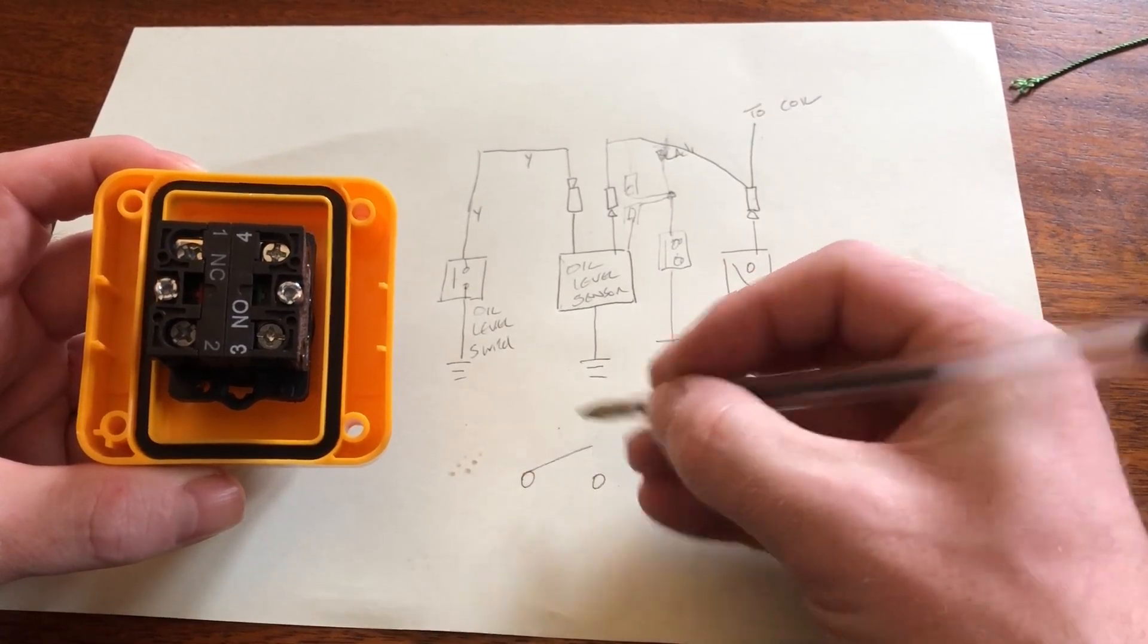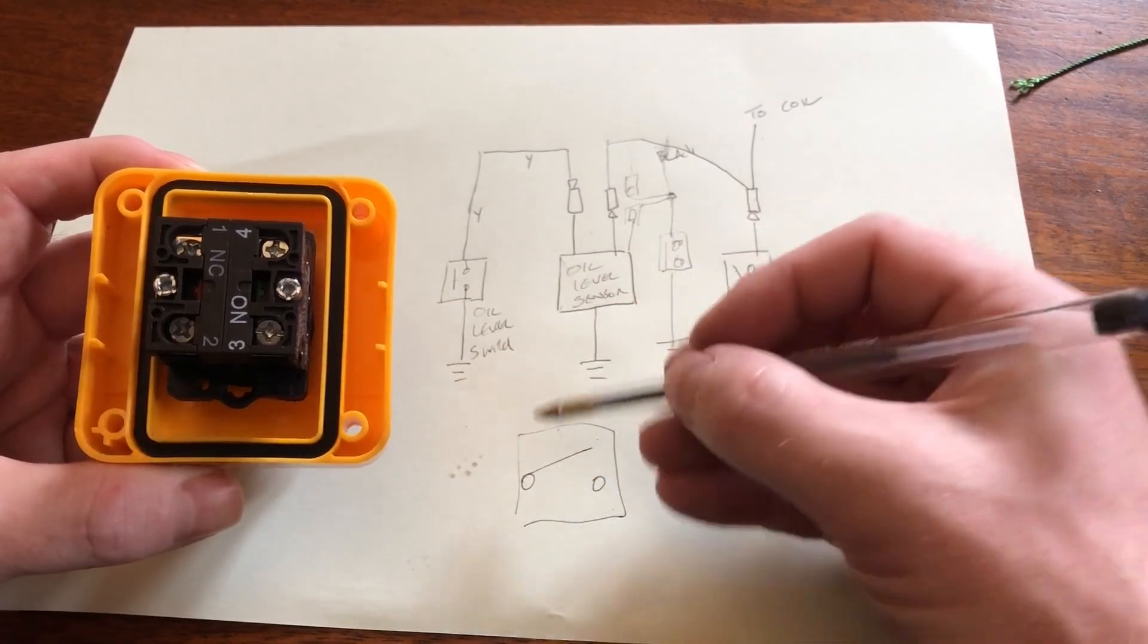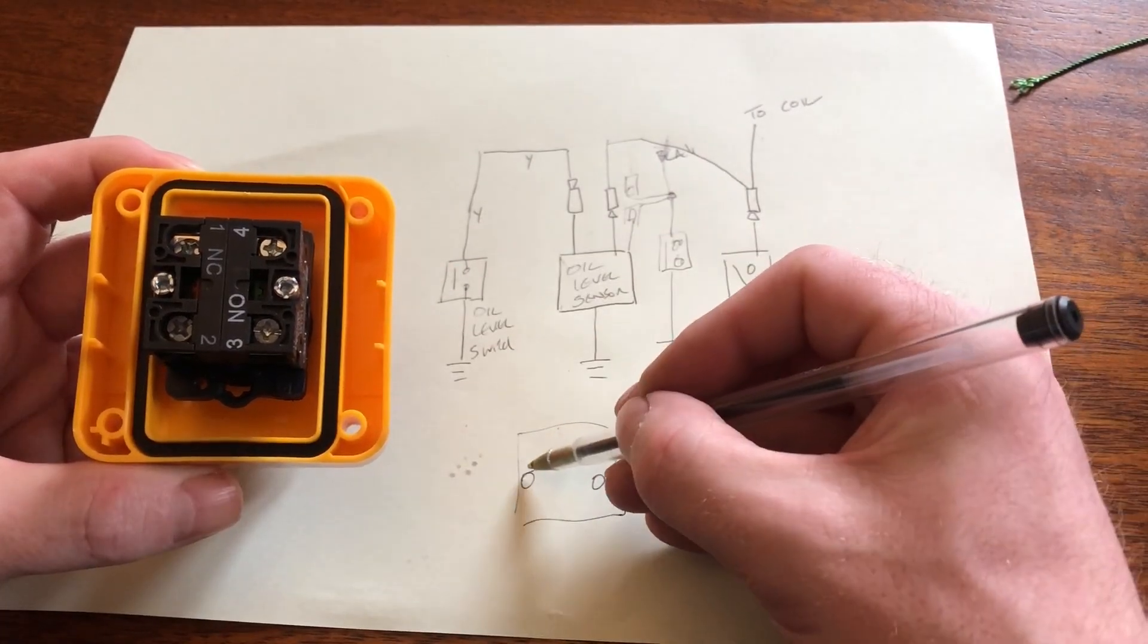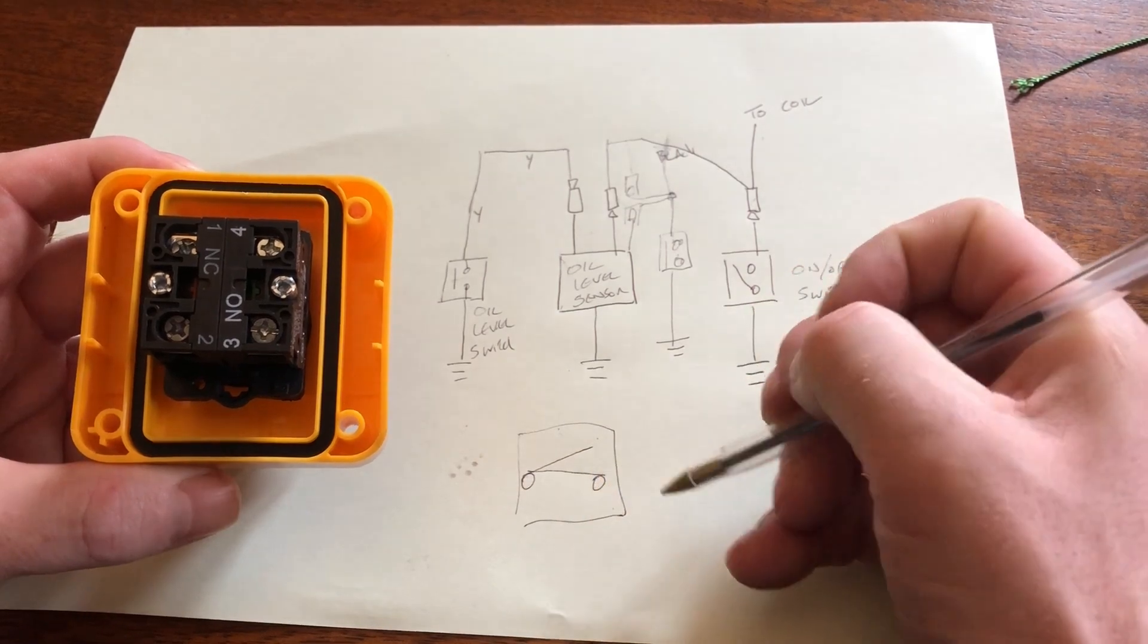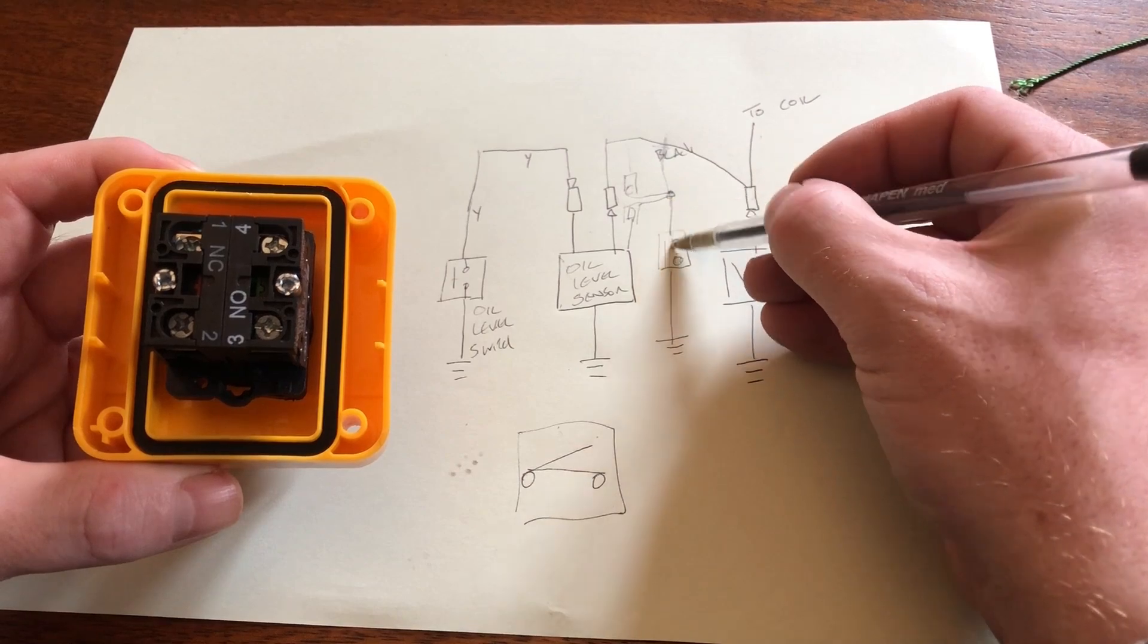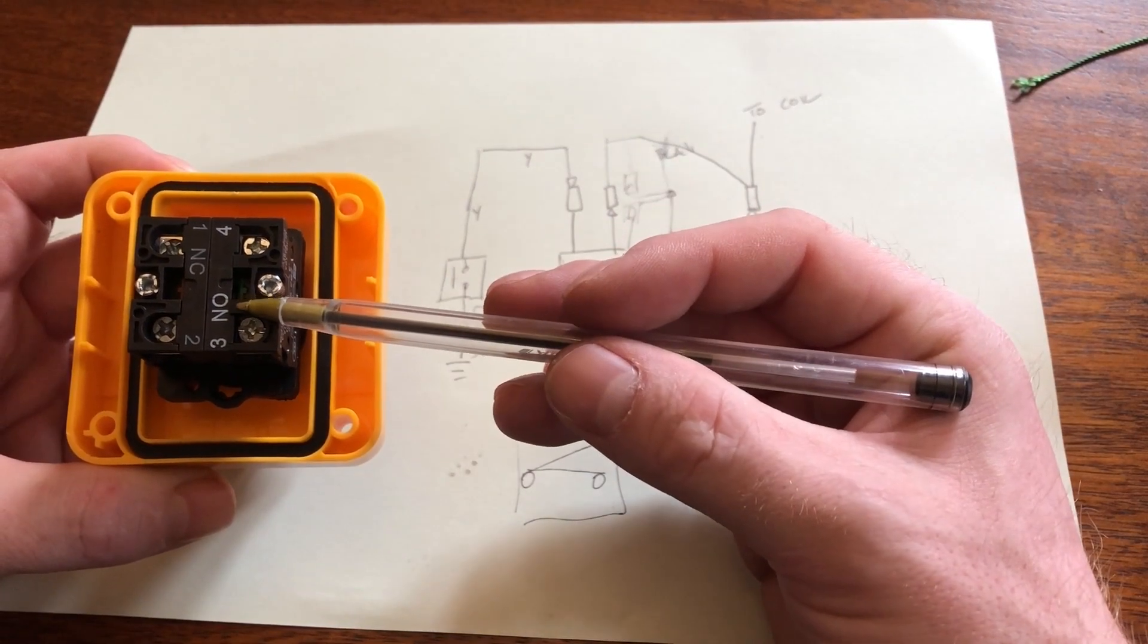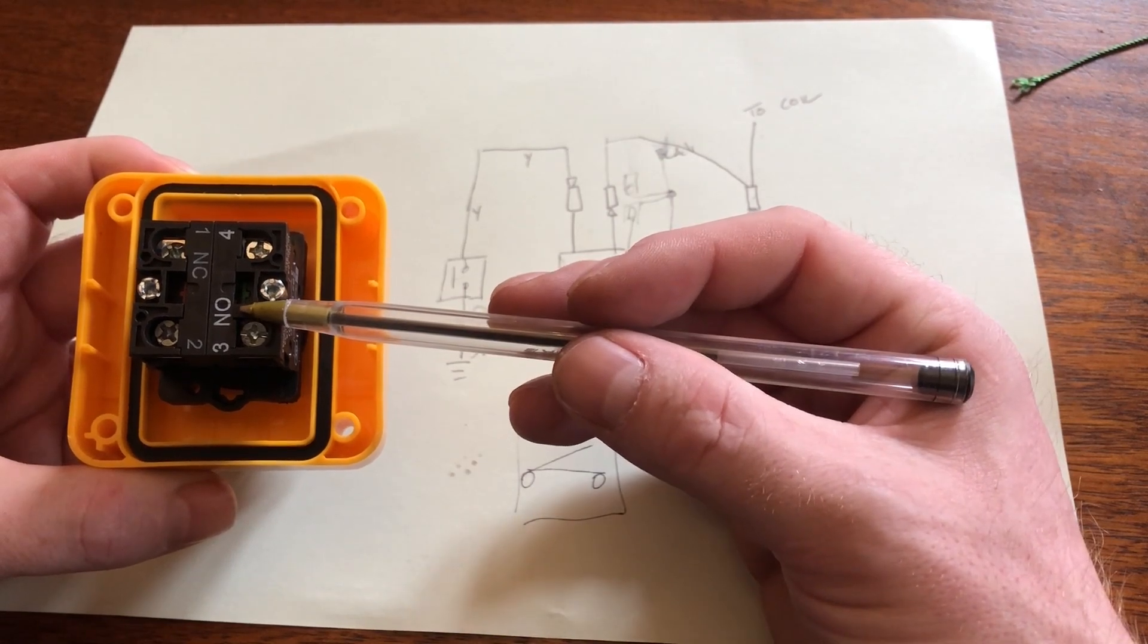Basically inside, that normally open switch is like that - normally open, so it isn't touching. When you hit the emergency stop, that then closes and touches because you want that configuration. So when you hit it, that closes and puts that coil down to earth. Make sure when you're buying an emergency stop, get a normally open emergency stop.